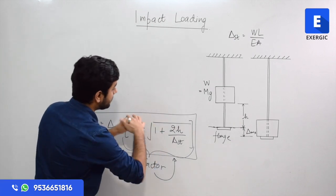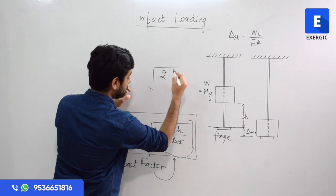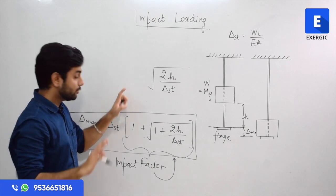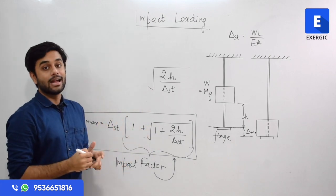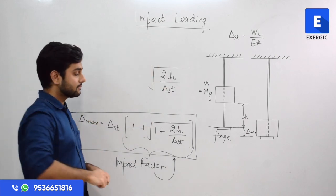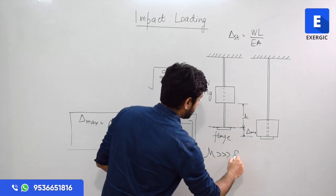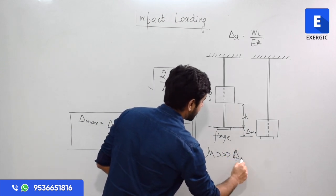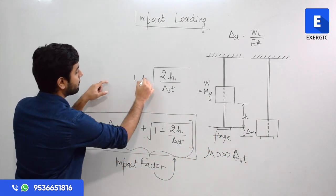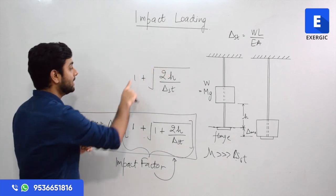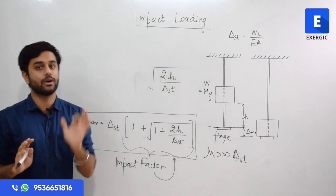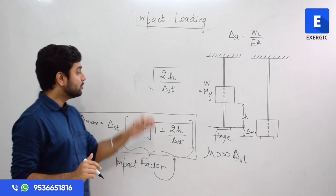This whole term can be written as directly root 2H by delta_st. You are ignoring 1 with respect to it and it is such a large quantity that for simplification, this 1 which is added to it, 1 plus root 2H by delta_st, this can also be ignored. Since it is such a large quantity that even after square root it is big enough. So for simplicity, you can ignore 1 also.